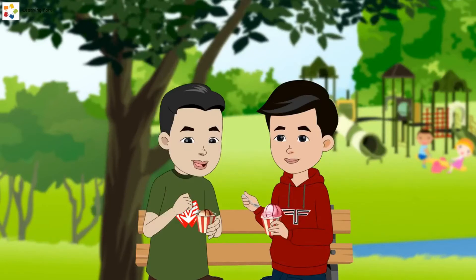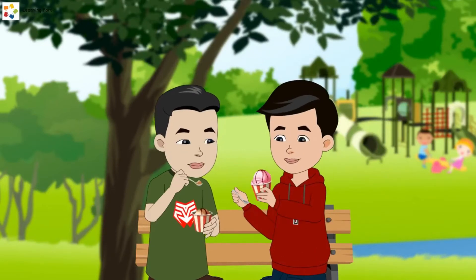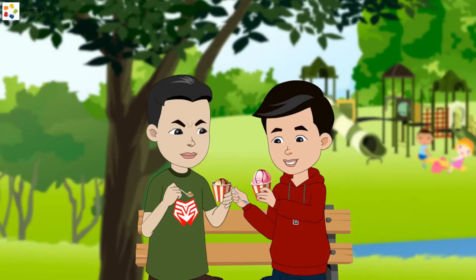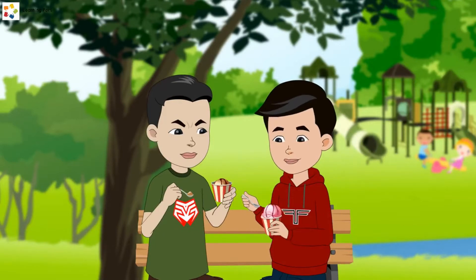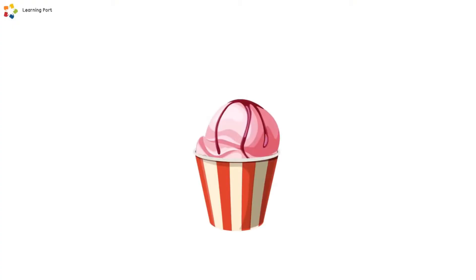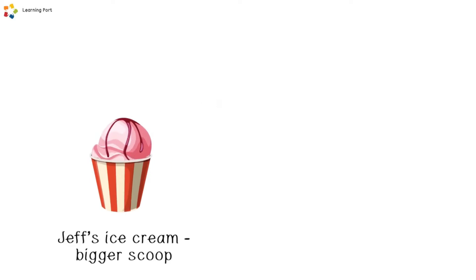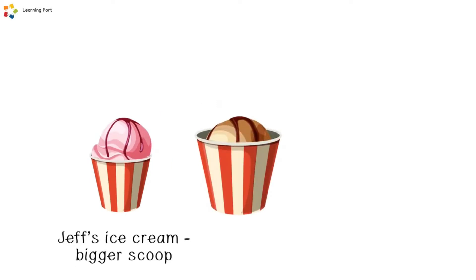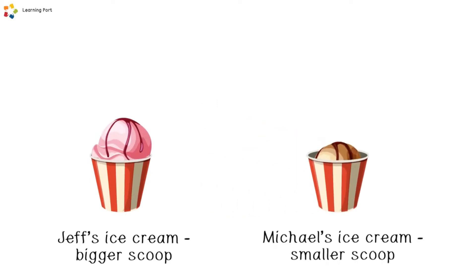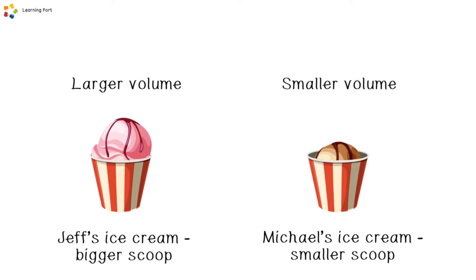Jeff and Michael bought a tub of ice cream each at the park. The amount of ice cream in each tub is not the same. Jeff's ice cream has a bigger scoop, while Michael's ice cream has a smaller scoop. Jeff's ice cream has a larger volume, and Michael's ice cream has a smaller volume.